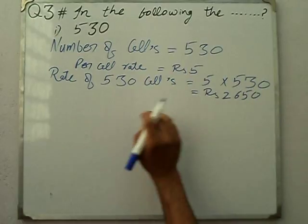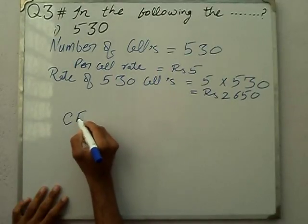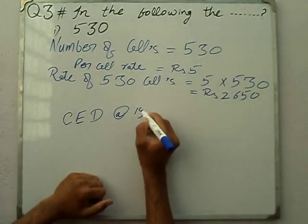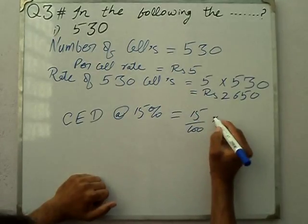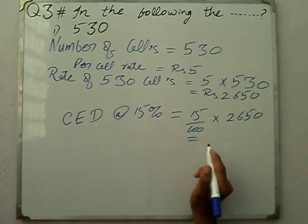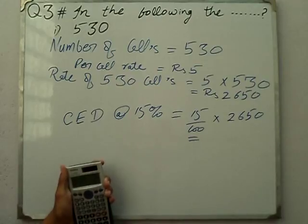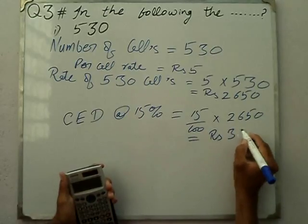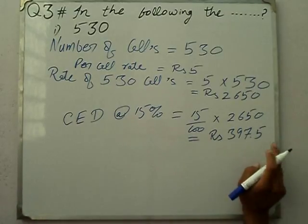2650 is the call rate. Now Central Excise Duty (CED). Its rate is 15%. Central Excise Duty at 15% multiply by 2650. When we multiply by percentage, it becomes 15 over 100 times 2650, which equals Rs 397.5.